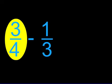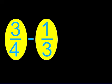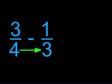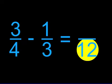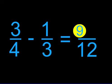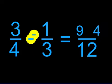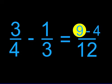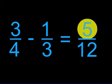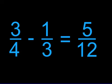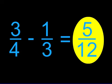Now let's try a subtraction problem. Here we have three over four minus one over three. Four times three equals twelve. Three times three equals nine. And one times four equals four. Remember, this is a subtraction problem. So nine minus four equals five. Our final answer is five over twelve.